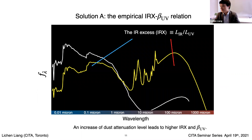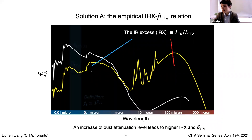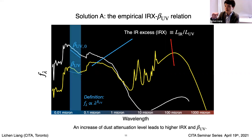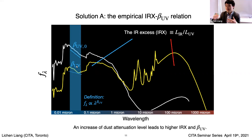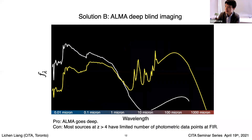IRX is basically a ratio of the IR luminosity — essentially the area enclosed below the far-infrared SED — to the UV luminosity. Beta is the spectral slope measured at UV wavelength, and beta-naught is the slope when you don't have dust attenuation, which is the intrinsic beta. After dust processing, the galaxy looks redder in the measured beta. Empirically, as I increase the level of dust attenuation, both IRX and beta will increase as a result of energy balance — this is something we already know.